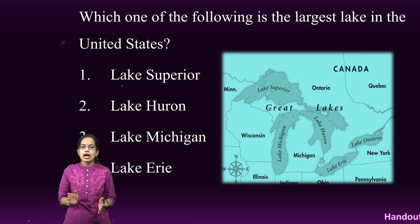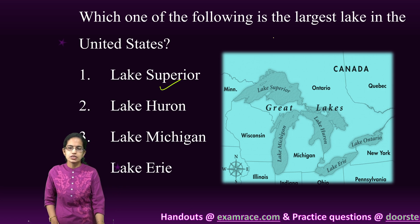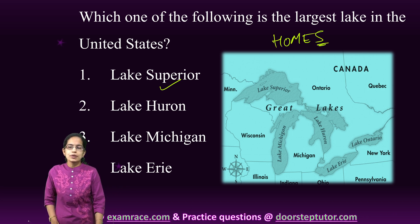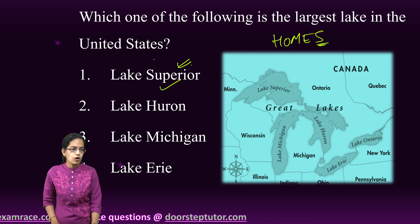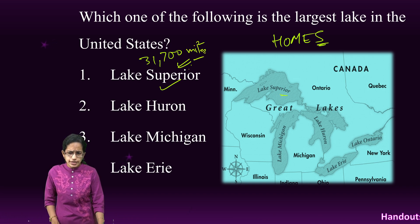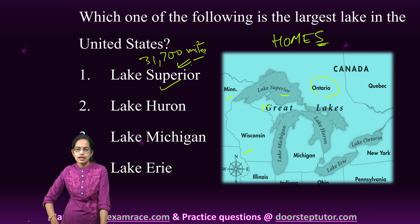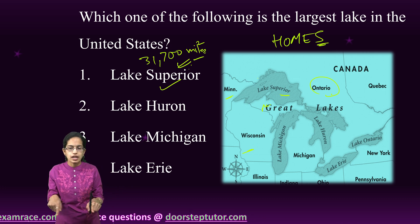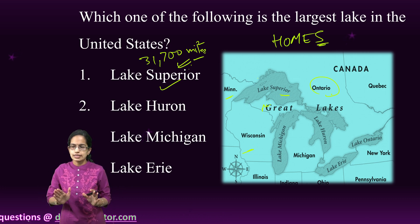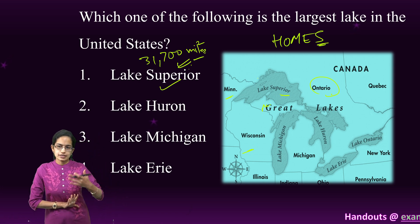The last question asks which is the largest lake in the United States. The correct answer, as seen on the map, is the Great Lakes — specifically Lake Superior, which is the largest among them with an area of nearly 31,700 square miles. Lake Superior touches the borders of Minnesota, Wisconsin, Michigan, and Ontario in Canada.